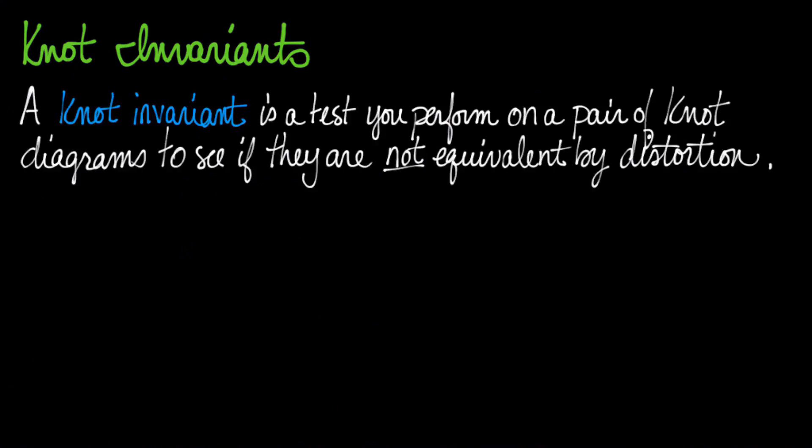So how do we tell two knot shapes apart? Just like topological invariance, we need mathematical knot invariants. And so just like the other sections, a knot invariant is a test that you perform on a pair of diagrams to see if they're not equivalent by distortion.